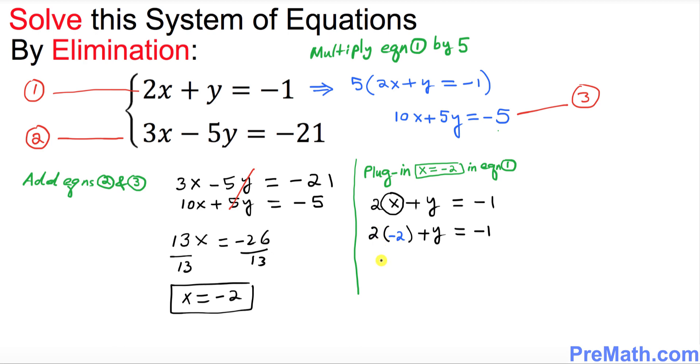We want to isolate y so I want you to move this negative 4 on the right hand side so y equals negative 1 and when you move negative 4 on the other side it becomes positive 4 so y turns out to be positive 3.